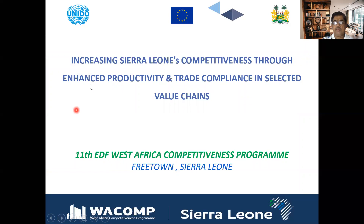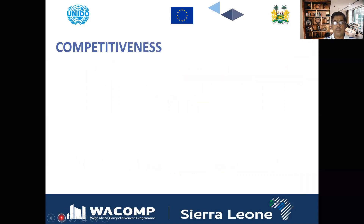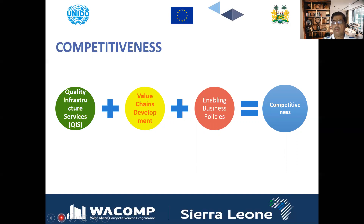This is just a brief about the UNIDO project. This is increasing Sierra Leone's competitiveness through enhanced productivity and trade compliance for the selected value chains. This is an EIF project funded by EU, and UNIDO is the main and leading implementing agency for this project in the country. This project has three major pillars. One is the quality infrastructure services, and these are the national quality infrastructure services related to export, so that trade compliance should be achieved in the country.